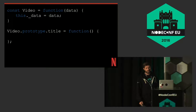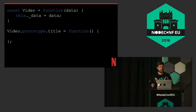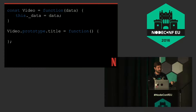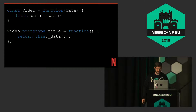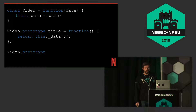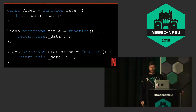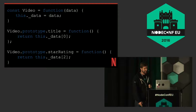I'll create the title method. What should we return from the title method? Data sub zero. And the same thing with star rating — star rating was item two. We have people actually listening.